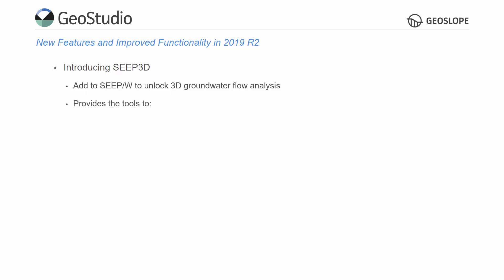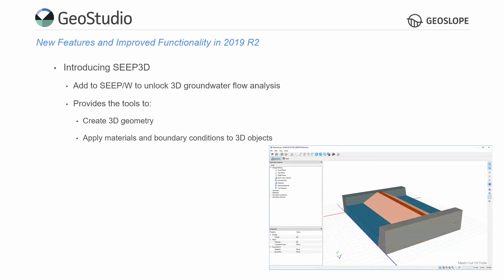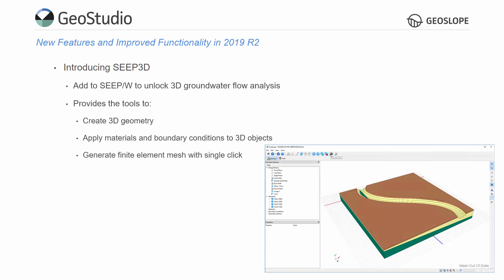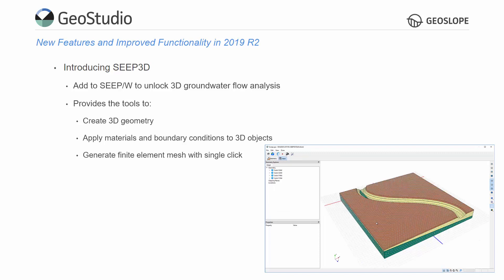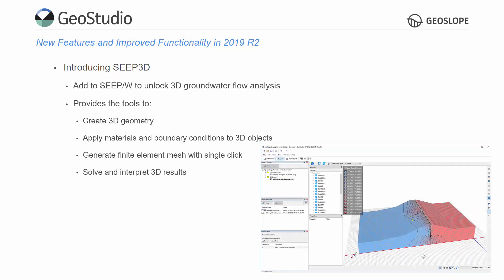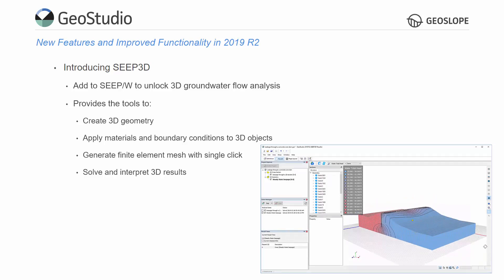SEEP3D provides the tools to quickly create three-dimensional geometries, as it comes with basic 3D model construction tools. The Properties window provides easy material and boundary condition definition directly to three-dimensional objects. The finite element mesh is generated with a single click, and users can easily interpret the three-dimensional results with contours, 3D vectors, isosurfaces, and graphs.